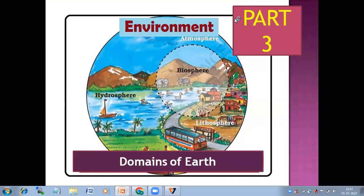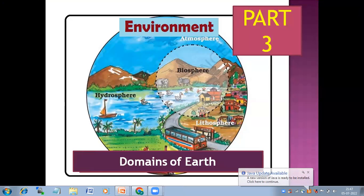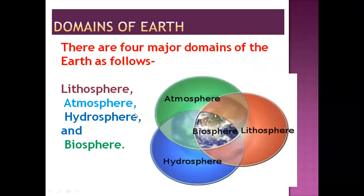Hello, dear students. Today we are with part three of the environment lesson — the domains of our Earth, also called the realms of the Earth. They are the atmosphere, hydrosphere, biosphere, and lithosphere, as you can see in the circle picture in your textbook. There are four main domains of the Earth: lithosphere, atmosphere, hydrosphere, and biosphere.